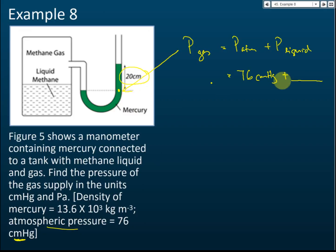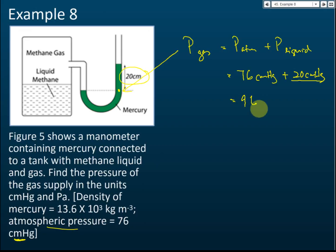The pressure of the liquid is equal to the length of the mercury column. In this case, the mercury column is 20 cm, so the pressure of the mercury is 20 cm Hg. Therefore the gas pressure equals 76 + 20 = 96 cm Hg. That is the pressure of the methane gas.